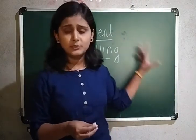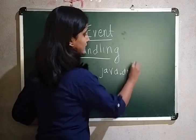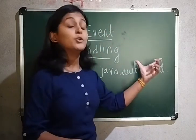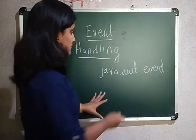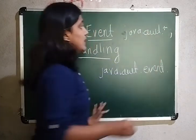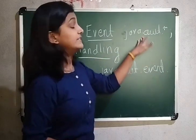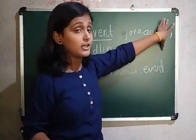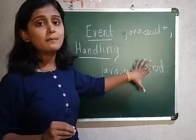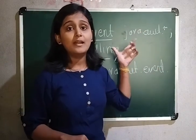For event handling, the package we are going to use is java.awt.event. Whenever we do programming in this chapter, it will come under java.awt.event. Now you might ask: if we use java.awt.* (asterisk), won't that include everything? No — java.awt.* includes all classes and interfaces under that package, but it does not include sub-packages. For event handling, we need a separate package: java.awt.event.